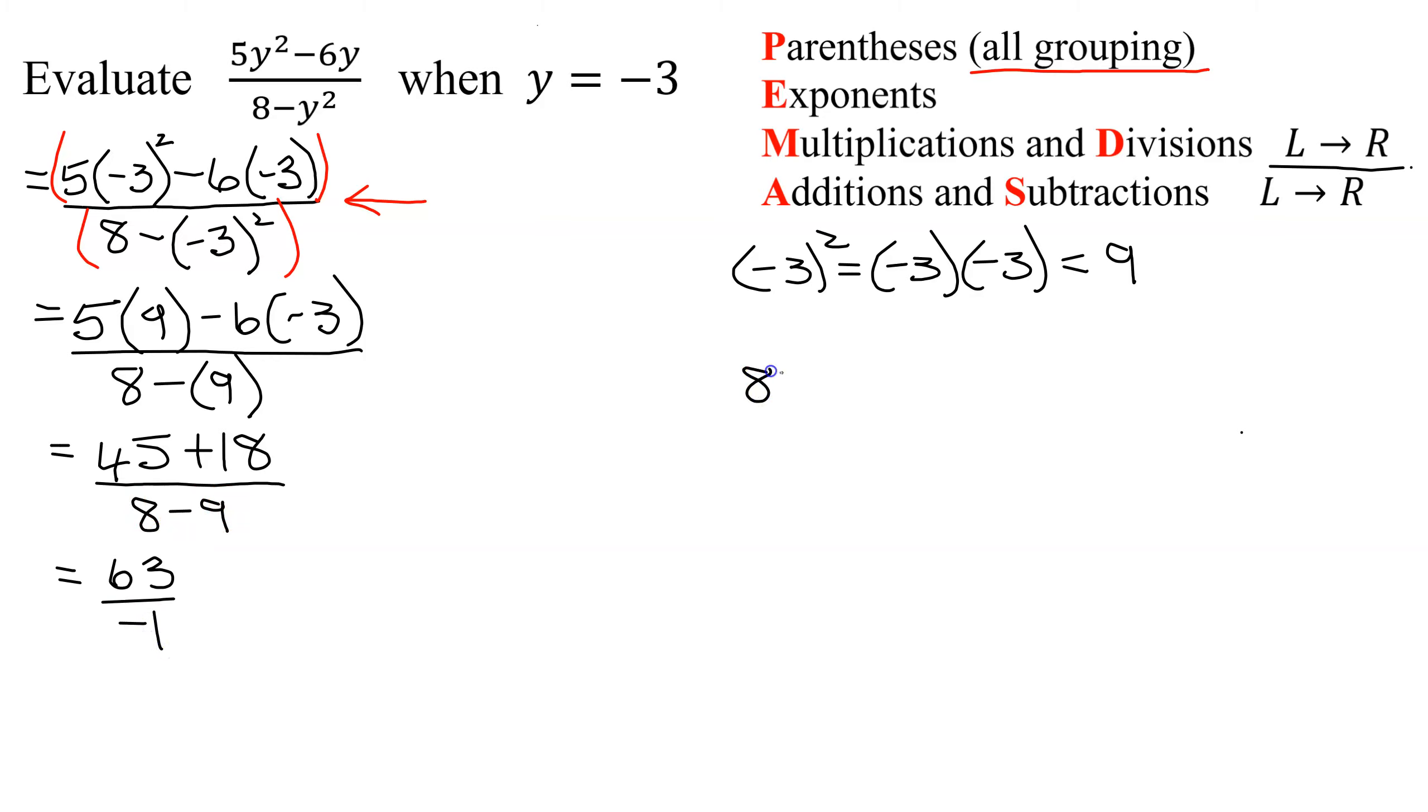Just to review, how do you figure out 8 minus 9? You can think about it as 8 plus a negative 9. And when you add integers with different signs, you take the sign of the bigger one and then subtract 9 minus 8 is 1. And then finally, my answer is a positive divided by a negative, which is a negative. 63 divided by 1 is 63. So my expression equals negative 63.